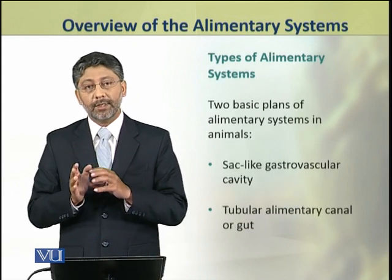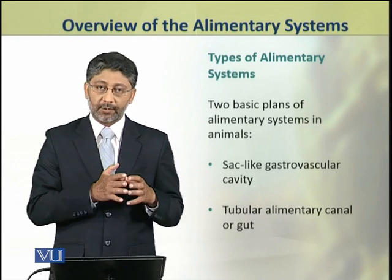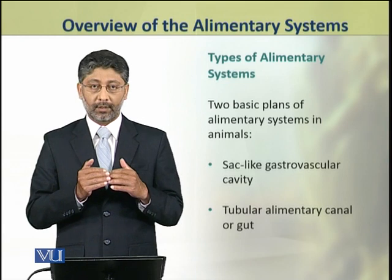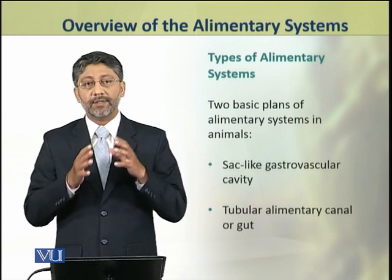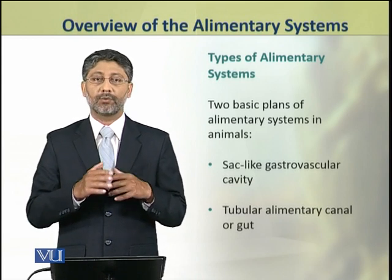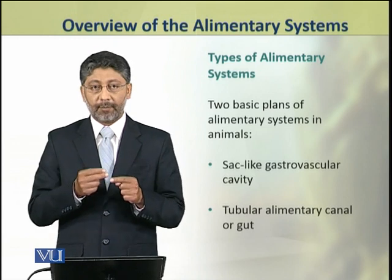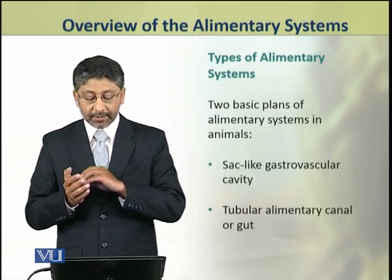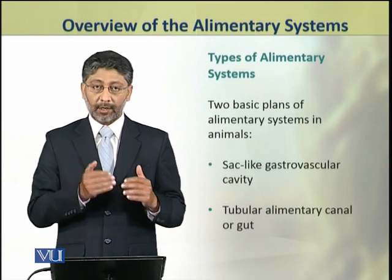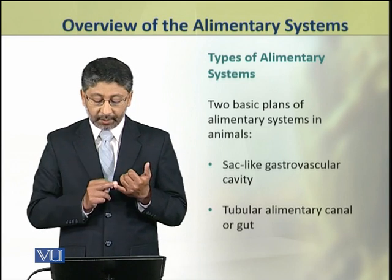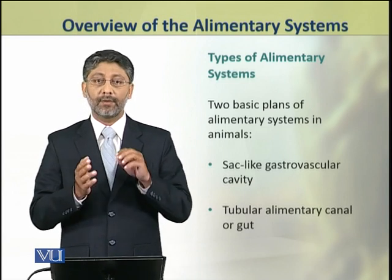There are two major types of alimentary systems observed across the animal kingdom. The first is a simple sac-like gastro-vascular cavity, while the second type, found in most animals, is a tubular alimentary canal, also known as the gut.